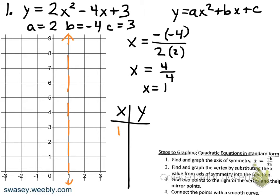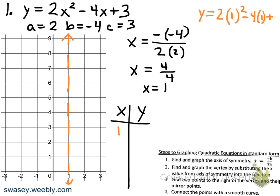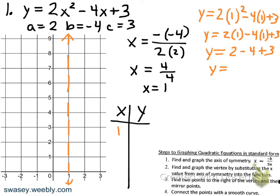Now we're going to plug 1 into this equation, so everywhere we see an x we're going to put 1. The equation is y equals 2x squared minus 4 times x plus 3; replacing x with 1 gives us 2 times 1 squared minus 4 times 1 plus 3. Using order of operations: 1 squared is 1, then 2 times 1 is 2, negative 4 times 1 is negative 4, and 2 minus 4 is negative 2, then negative 2 plus 3 is 1. So what we just found is the vertex — the minimum or maximum point on our parabola.